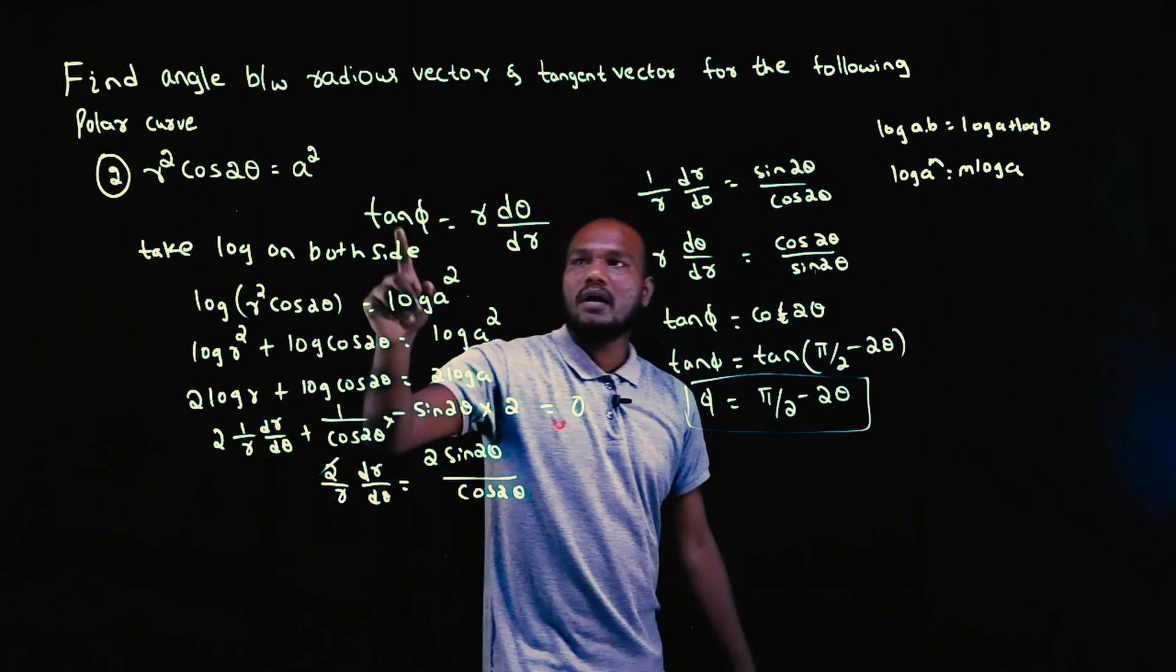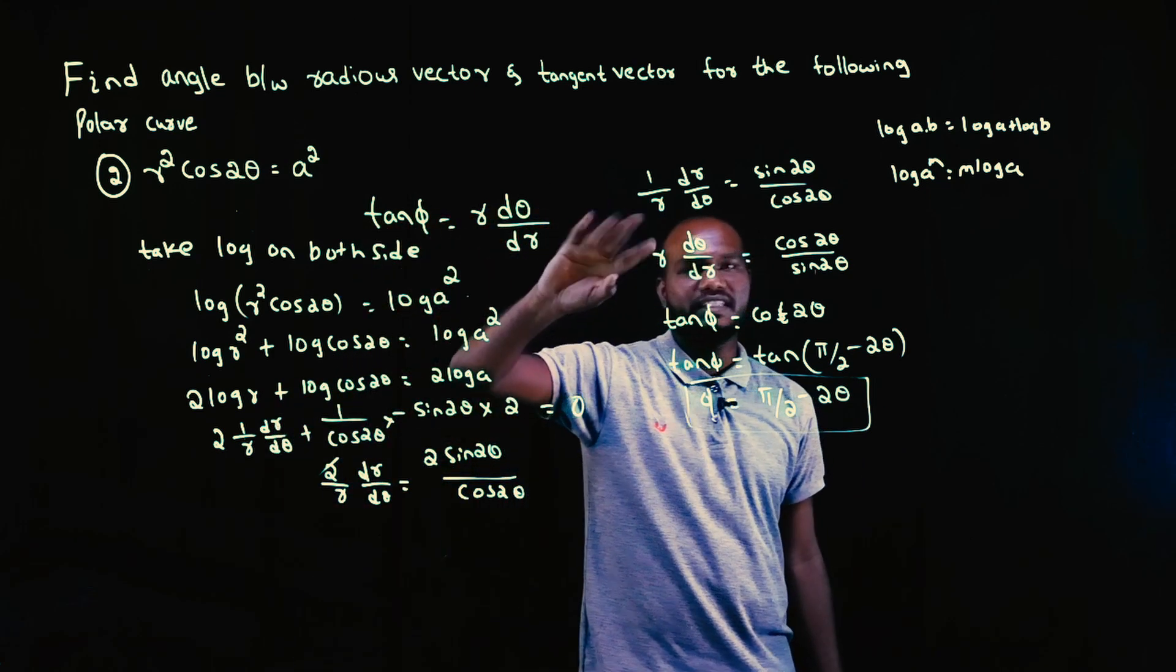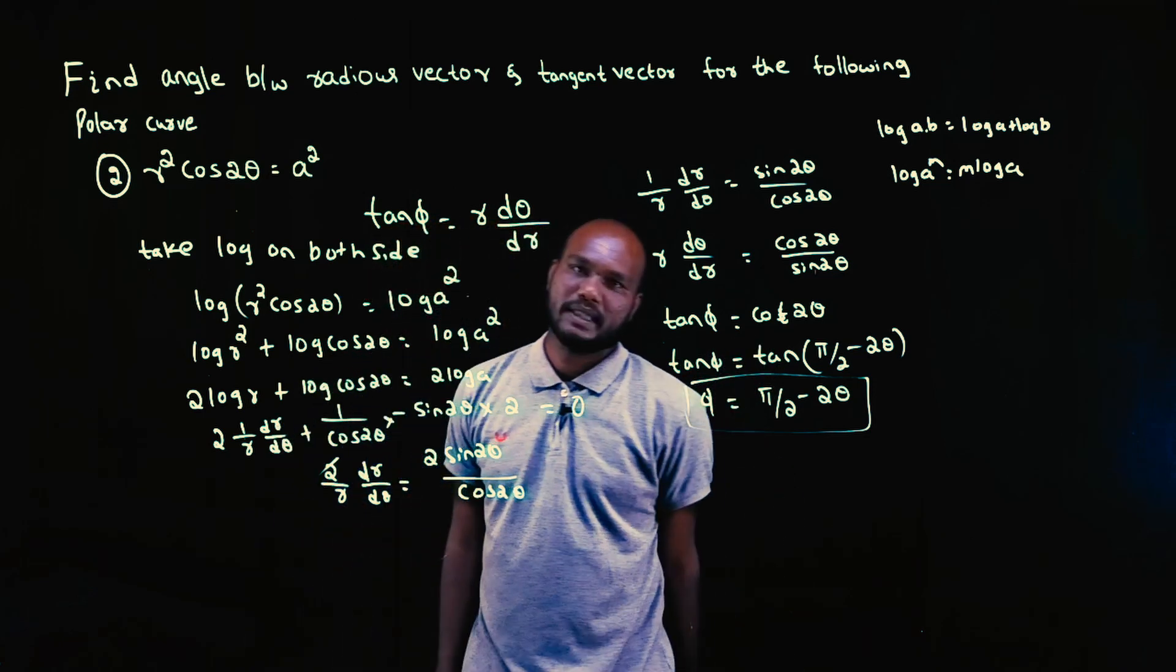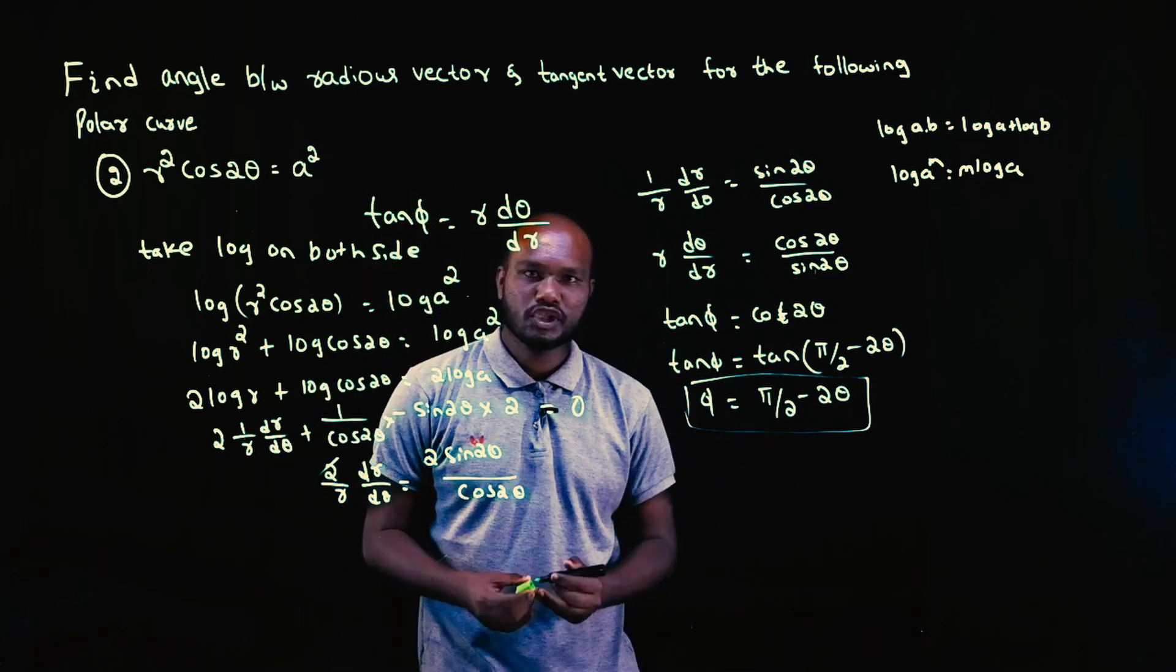Whenever you take the log, you will get 1/r. If you just reverse it, you will get tan φ, and with just a little trigonometry, you will arrive at the answer. Is that cool? Simple question.